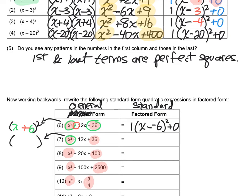Square root of the first term is x. Square root of 36 is still 6, but this time the center sign is negative, so it's x minus 6 squared. That gives us 1 times x minus 6 squared plus 0. Next one: x and the square root of 100 is 10. Carry along the middle sign — still positive — so x plus 10. In the appropriate form, we're going to have 1 times x minus negative 10 squared plus 0.